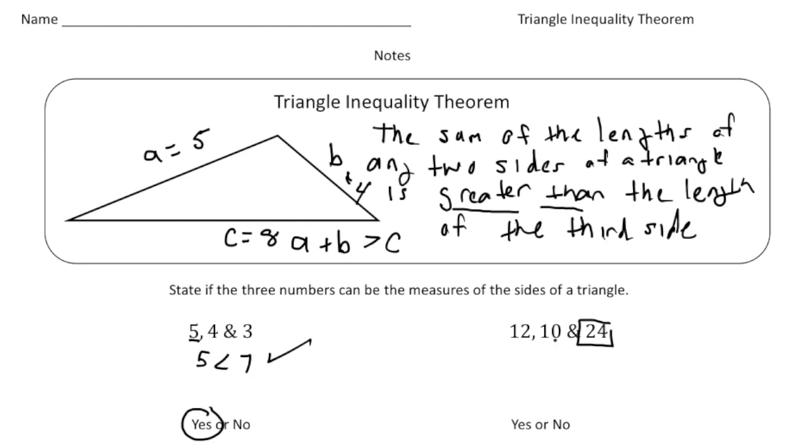And now if I add up 12 and 10, well 12 and 10 is 22, and the sum of those two sides is less than 24, and that's just not possible with triangles. So the answer for this one would be no, those are not the lengths of a triangle.